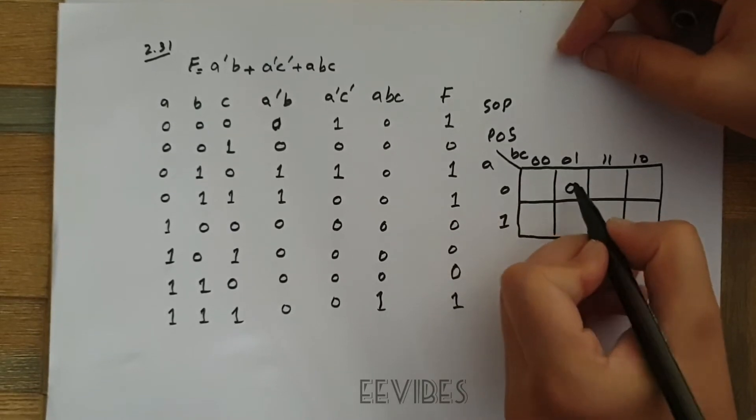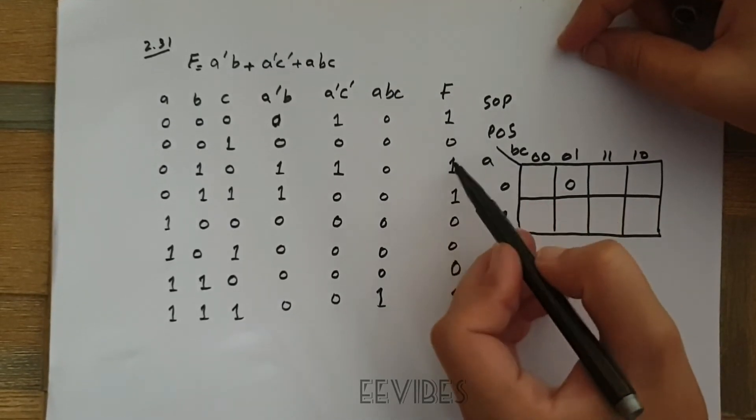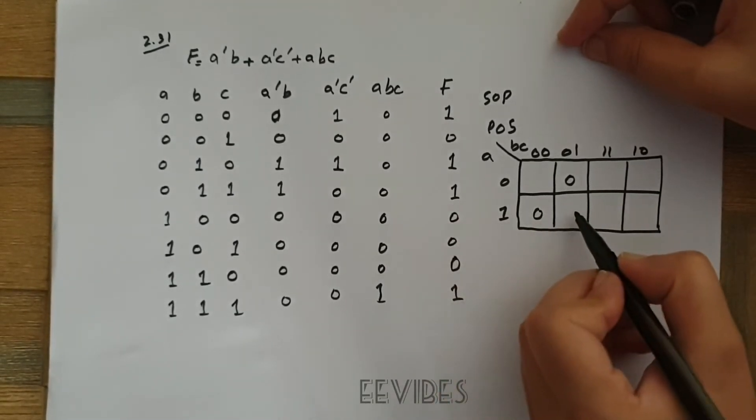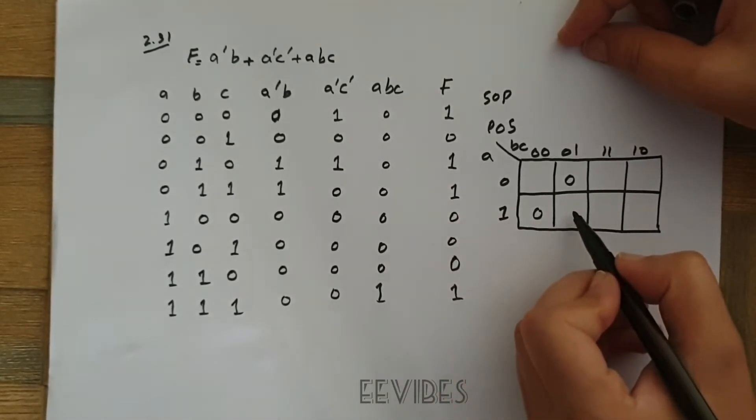So you can see the first minterm is equal to 0, 0 1 2 3, 4th minterm is 0, 5th minterm is 0, and similarly 6th term is equal to 0.